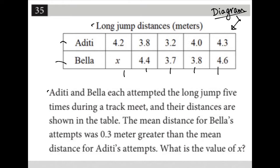The question says Aditi and Bella each attempted the long jump five times during the track meet and their distances are shown in the table. Okay, so we see that. All of Aditi's distances are shown. Bella has only four out of her five because we have this unknown one for the first one. The mean distance for Bella's attempts was 0.3 meters greater than the mean distance for Aditi's attempts.